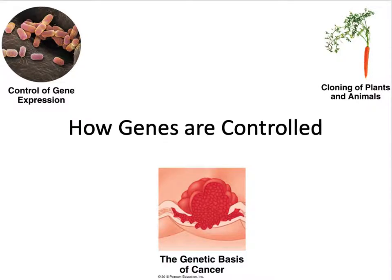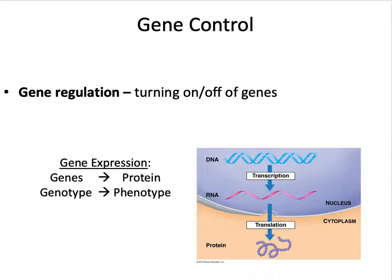We are going to talk about the regulation of gene expression — gene control, gene regulation. When genes are turned off, we cannot make the protein product. When we talk about how genes are turned on, we talk about how the process goes from DNA to mRNA to protein, going from our genotype to our phenotype. We want to make the protein product, so we turn on transcription and translation.